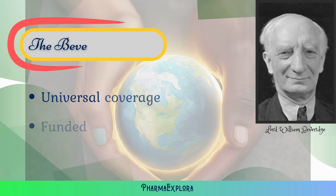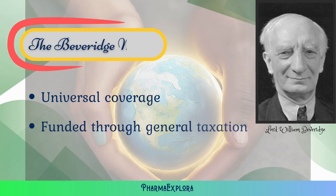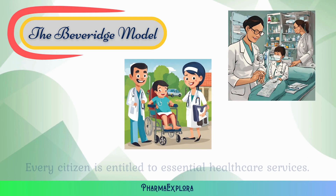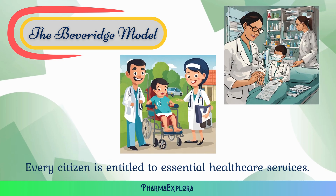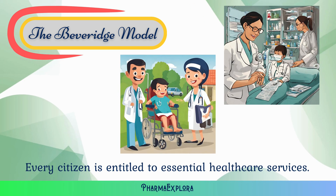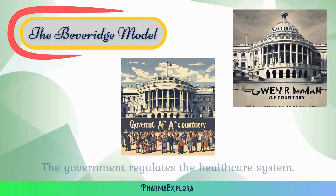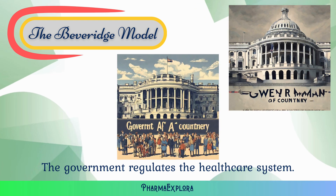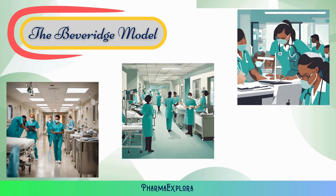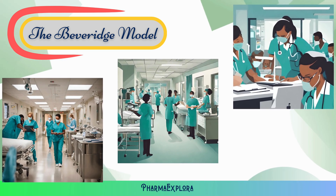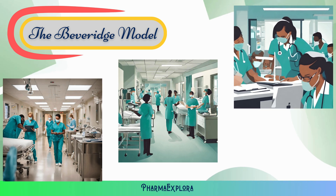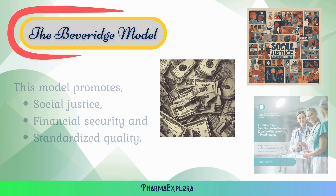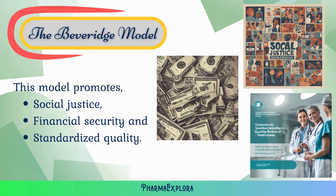The Beveridge model, named after social reformer William Beveridge, is a health care system where universal coverage is funded through general taxation. Every citizen, regardless of income or health status, is entitled to essential health care services. The government manages and regulates the system, acting as the sole payer for health care services. Doctors and hospitals supported by the government provide health care, making sure people can get medical help based on what they need without having to pay money upfront. The model promotes social justice, financial security, and standardized quality.